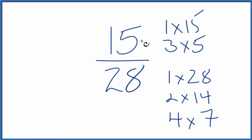So it seems like there should be a common factor between 15 and 28, but really the only common factor that we see here is 1. And because of that, we can't reduce or simplify this any further.